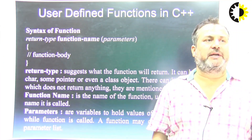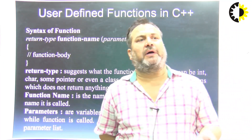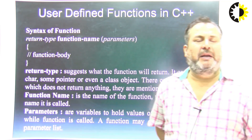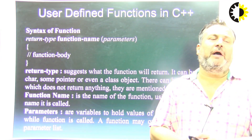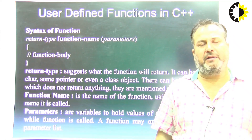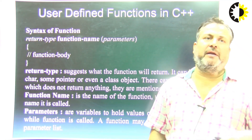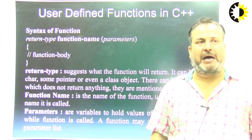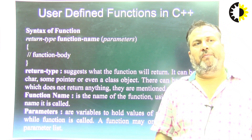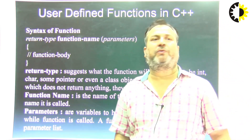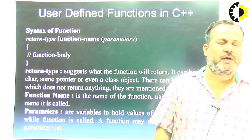This is the syntax of a function. We would have to write the return type — either int, float, or character — then the name of the function, then we could pass the parameters. There may also be functions which do not have parameters.